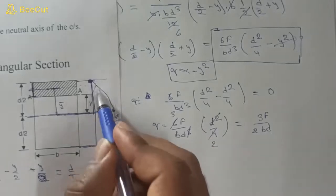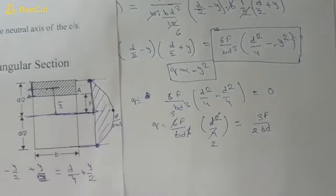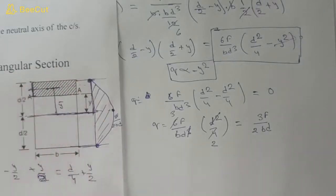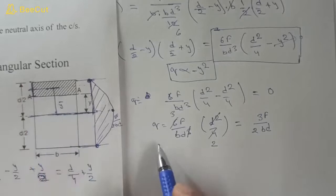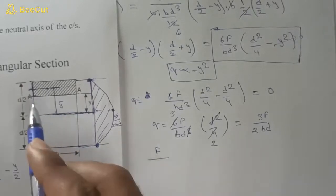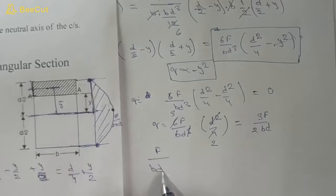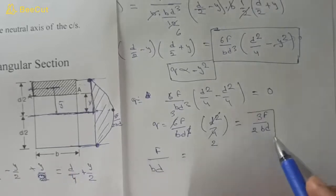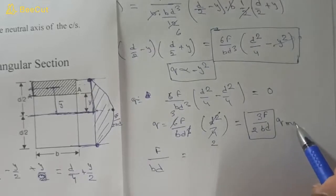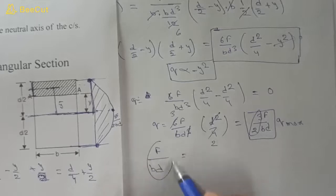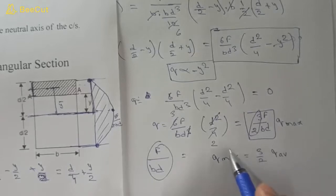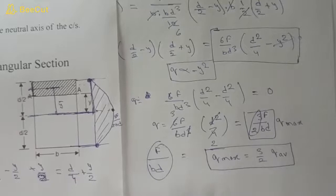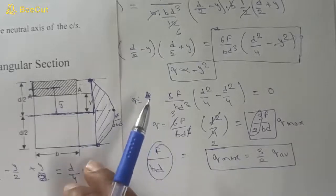The shear stress diagram across a rectangular cross section is parabolic with zero at the edges and maximum at the center. The average shear stress is τ_avg = F/(B·D). Comparing: τ_max = 3F/(2BD) = (3/2) · τ_avg. So τ_max = (3/2) · τ_avg. This is an important result — the maximum shear stress is 1.5 times the average shear stress for a rectangular section.